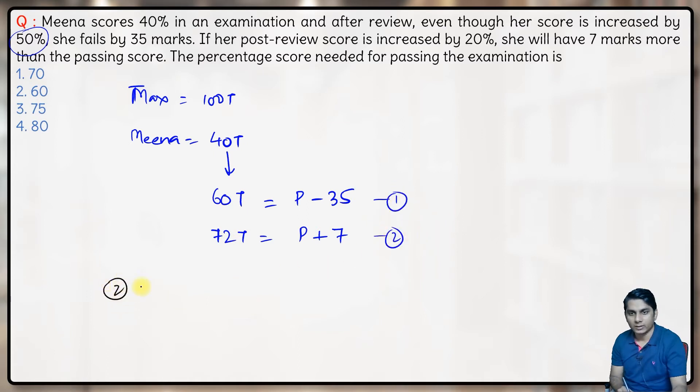Now let's subtract the first equation from the second. So we have 12T is equal to 42, that means T is 42 by 12. So T comes out to be 21 by 6, which is 7 by 2.